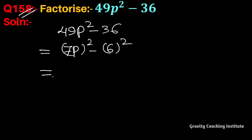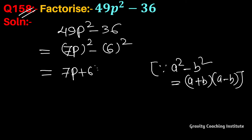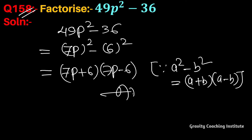This expression is in the form a² minus b², and we know that a² minus b² equals (a + b)(a - b). So the factorized form is (7p + 6)(7p - 6), which is the required answer.